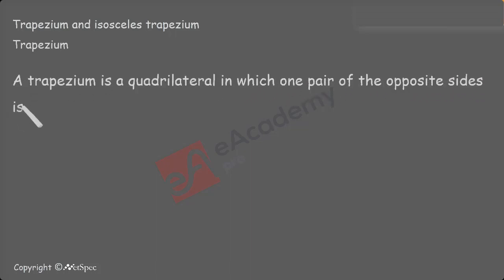Let's start our discussion with the trapezium. What is meant by a trapezium? Let's know the answer. A trapezium is a quadrilateral in which one pair of the opposite sides is parallel.